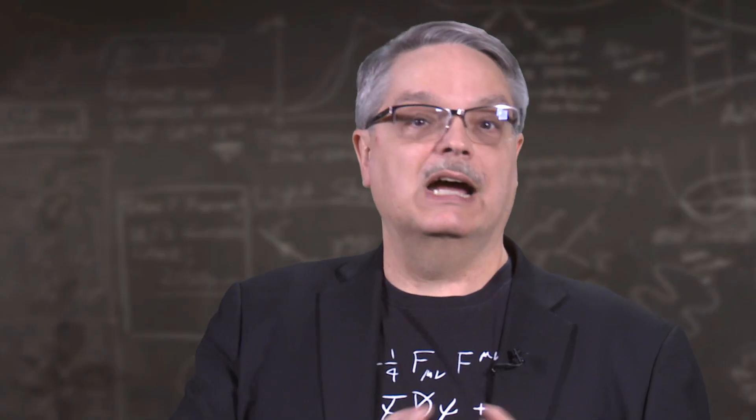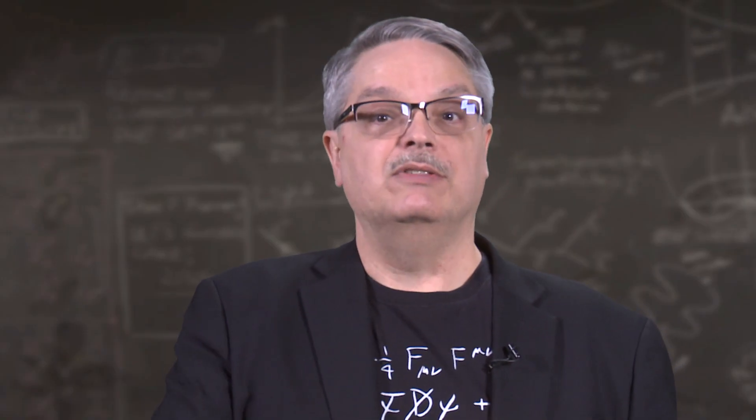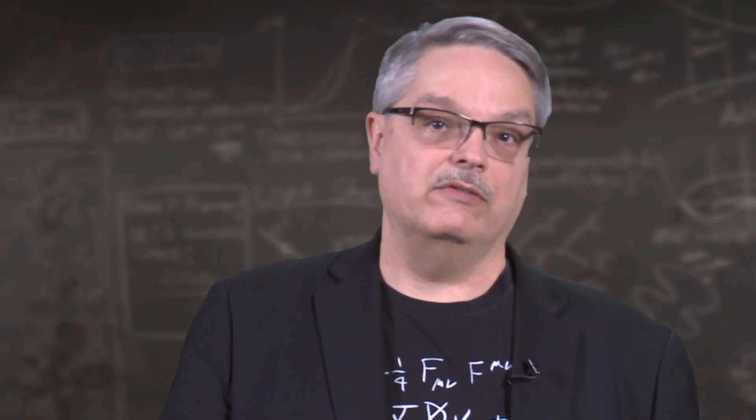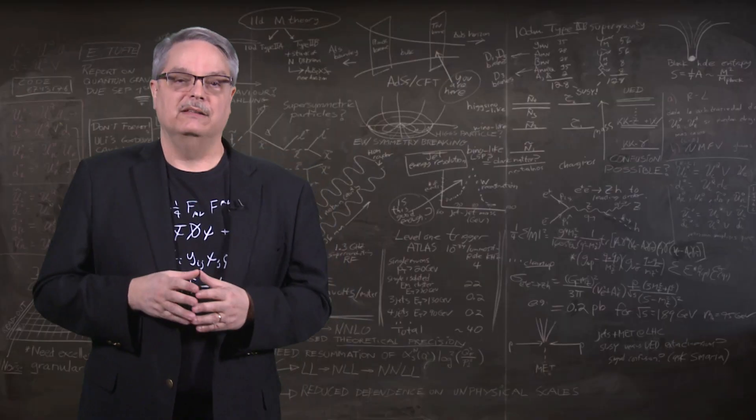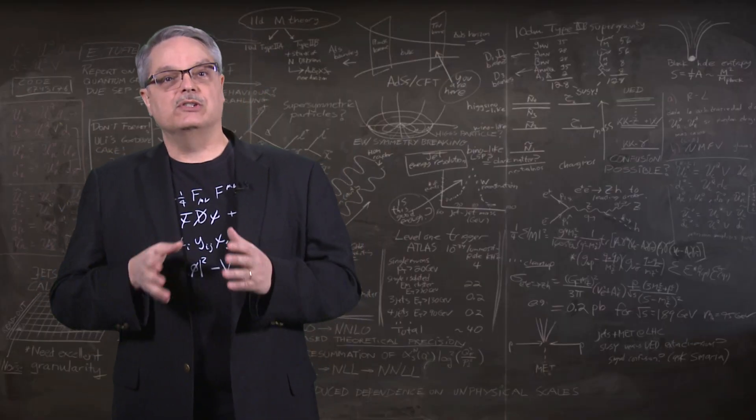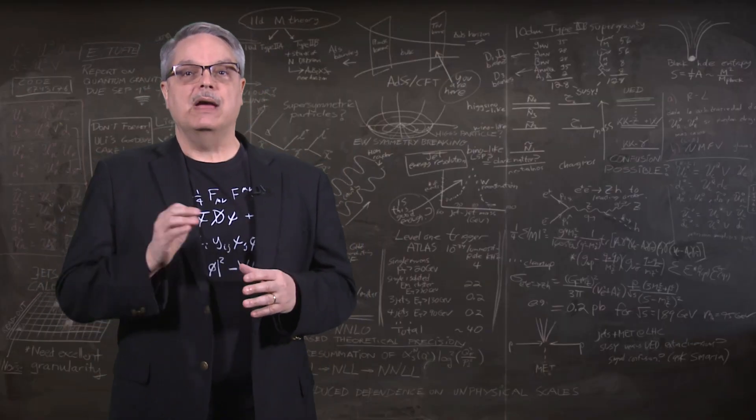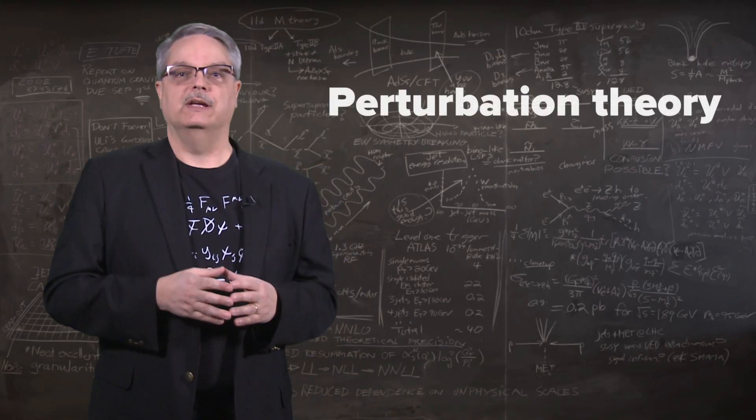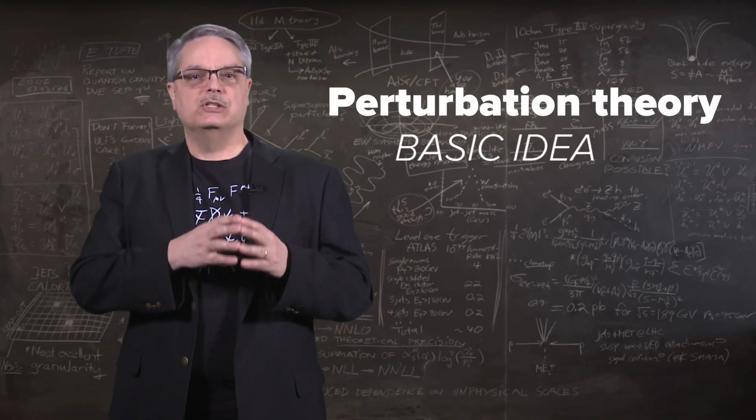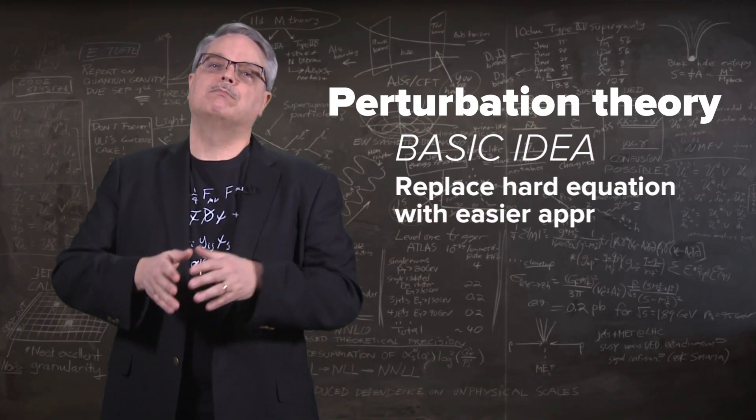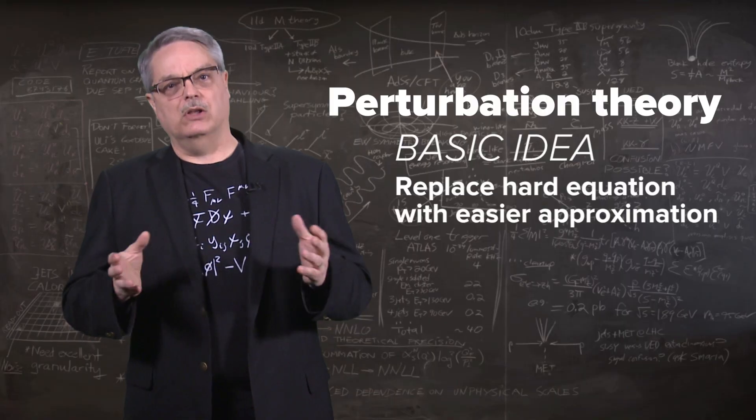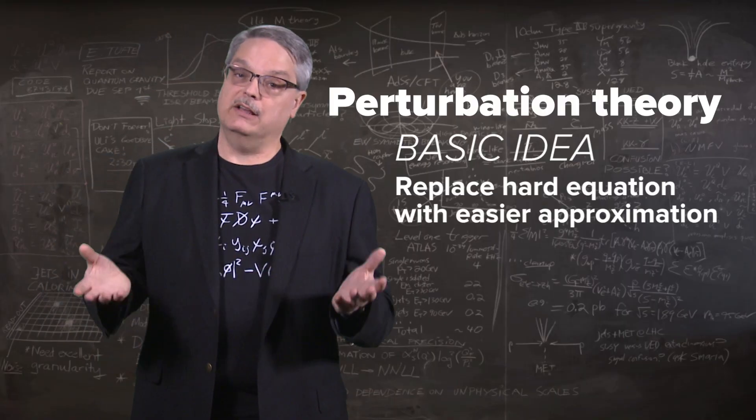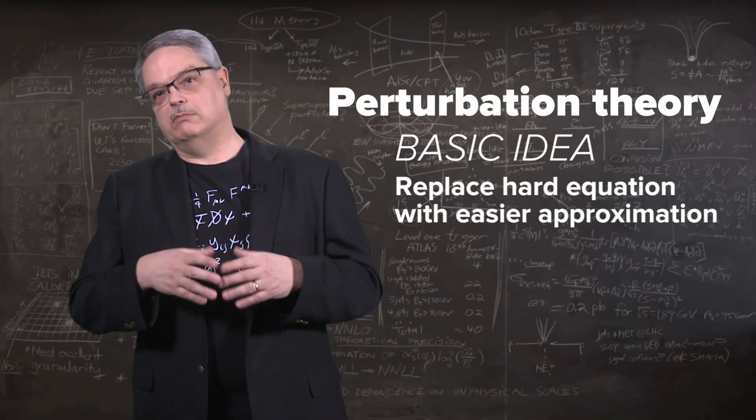So that might make you wonder how it is that scientists can claim that they know what they're doing when they can't even solve the equation that is central to the theory. Something sounds kind of shady, and you'd be right to wonder about that. However, theoretical physicists are a clever bunch, and they employ a mathematical trick called perturbation theory. The basic idea is to replace the unsolvable equation with one that is approximately correct. While the calculation won't be perfect, it will be pretty close. And if you need a more accurate calculation, you employ a more accurate approximation.